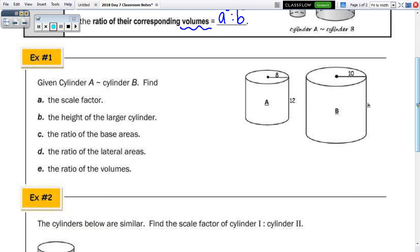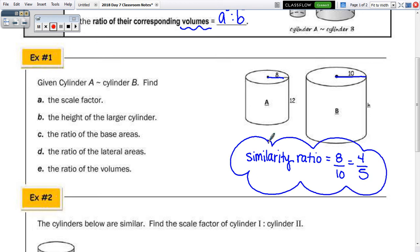So let's look at example number 1. Given in number 1 that cylinder A is similar to cylinder B, find the scale factor, the height of the larger cylinder, the ratio of the base areas, ratio of the lateral areas, and the ratio of the volumes. So I'm going to start by noting the similarity ratio.